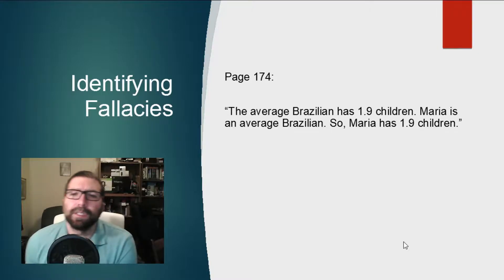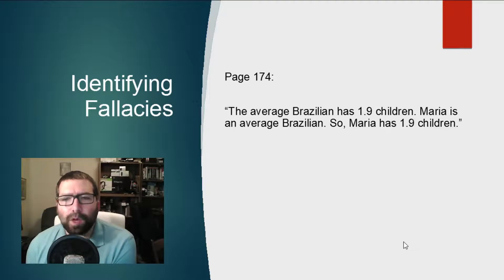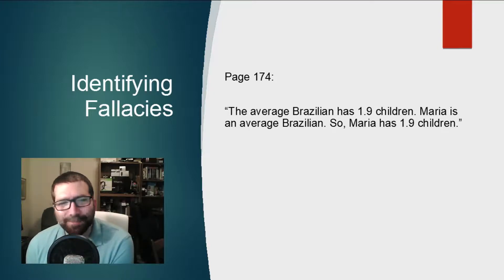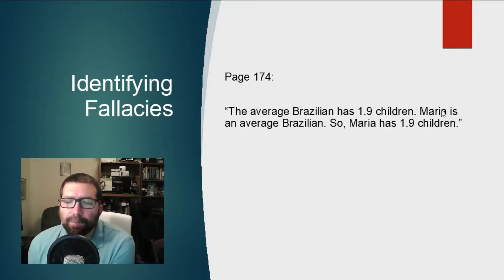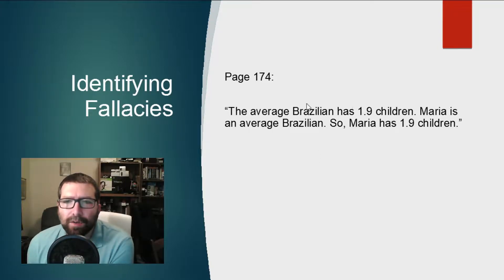The next problem is on page 174. 'The average Brazilian has 1.9 children. Maria is an average Brazilian. Therefore Maria has 1.9 children.' What happened to the tenth of a child? The problem is that 'the average Brazilian' is a collective idea — Brazilians as a whole. Maria is part of that collective but she is not the same as that collective.